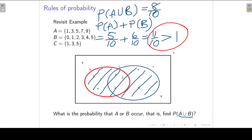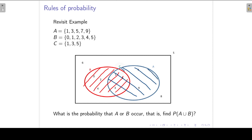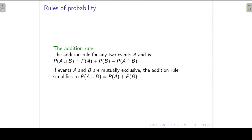The reason is that when we add P(A) and P(B), looking at the Venn diagram, we are in fact counting the probability of the intersection twice. This brings us to the addition rule, which states that P(A∪B) = P(A) + P(B) minus P(A∩B).